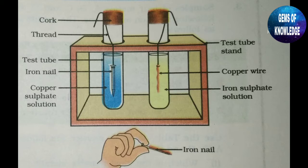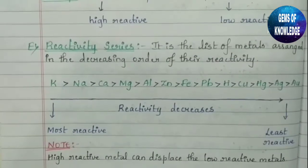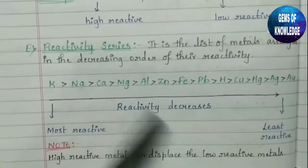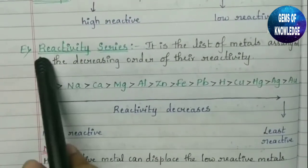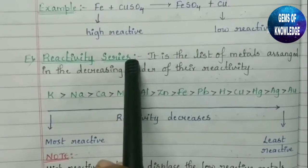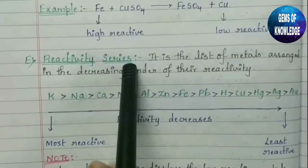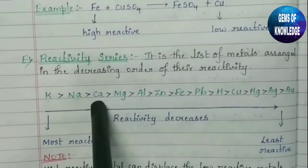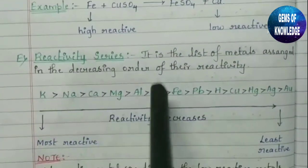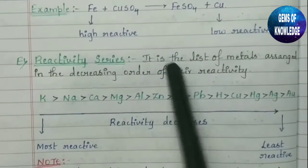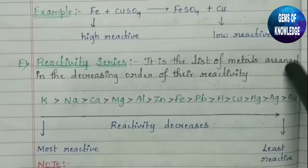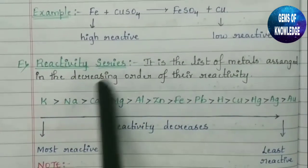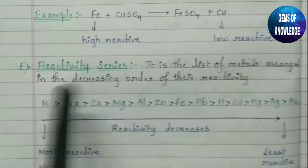I hope the experiment is clear. The next part we are going to study is the reactivity series. This experiment happened because of the reactivity series. The reactivity series is a list of metals arranged in decreasing order of their reactivity.